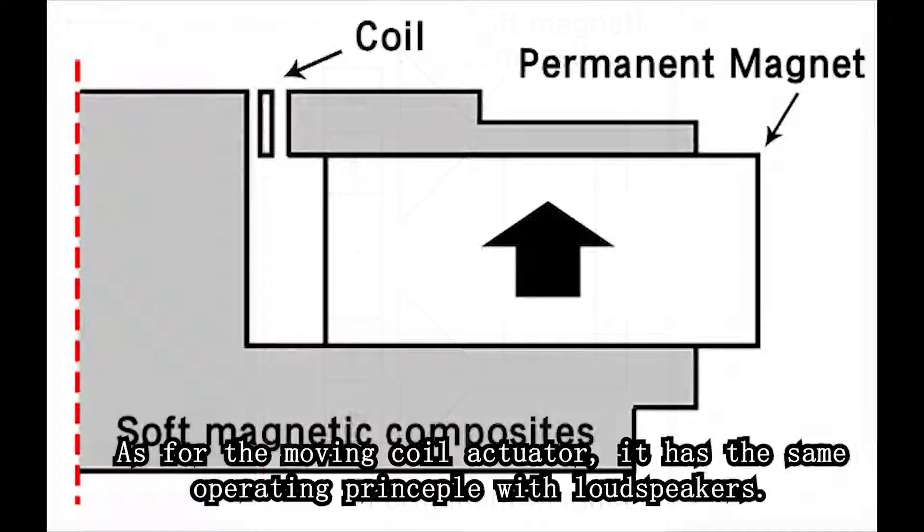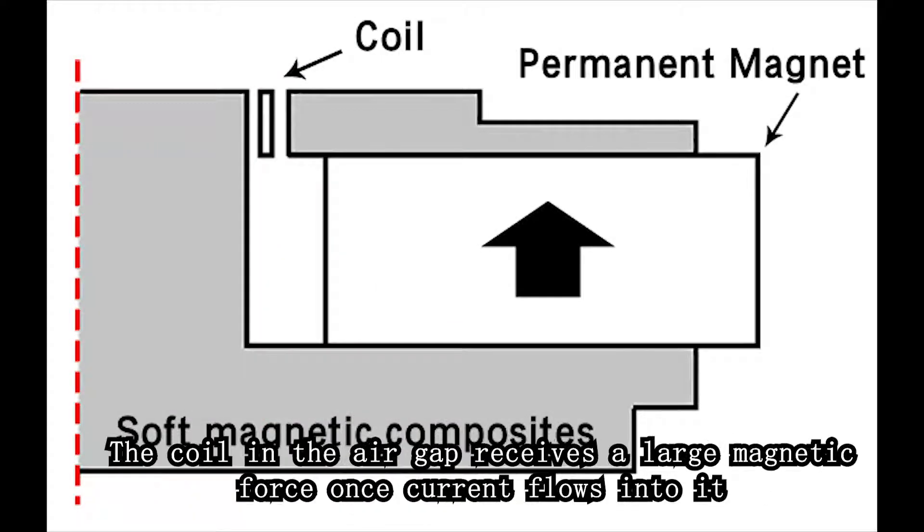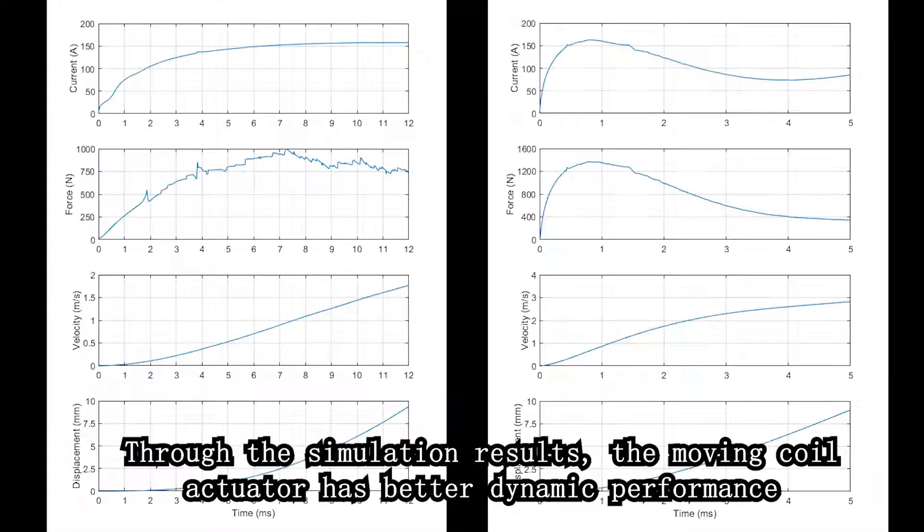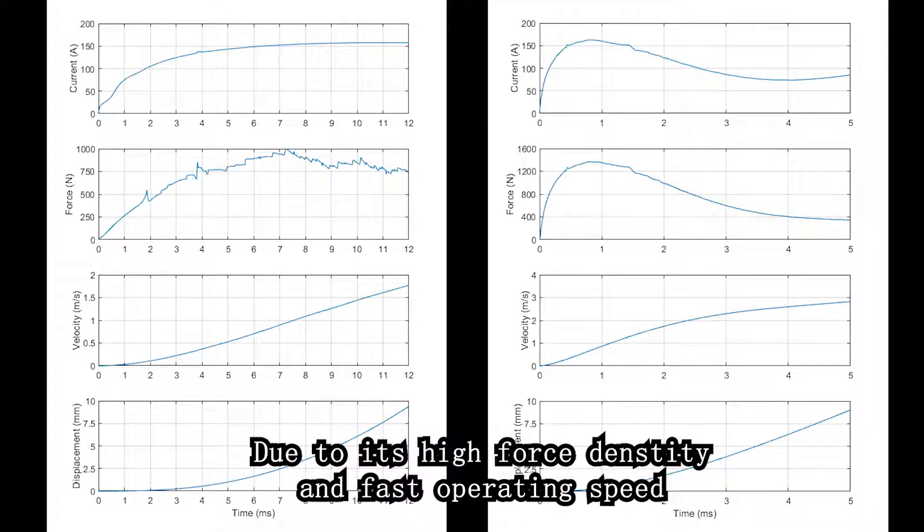As for the moving coil actuator, it has the same operating principle as a loudspeaker. The coils in the air gap receive a large magnetic force once the current flows into it. Through the simulation results, the moving coil actuator has a better dynamic performance due to its high force density and fast-operating speed.